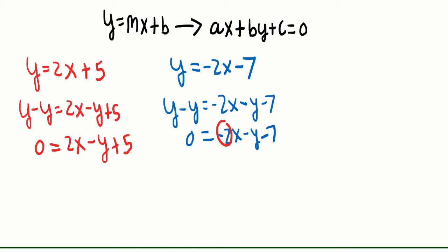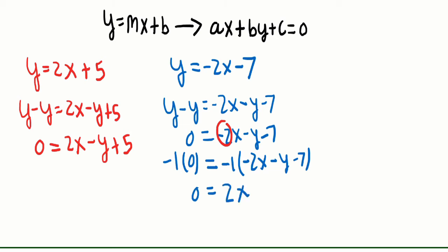To make our A value positive, we have to multiply both sides by negative 1, just like when we balance an equation. So we have negative 1 times the quantity negative 2X minus Y minus 7. Distributing, negative 1 times negative 2X gives us positive 2X, negative 1 times negative Y gives us plus Y, and negative 1 times negative 7 gives us positive 7. So this equation is now in standard form because A is positive and B and C are integers.